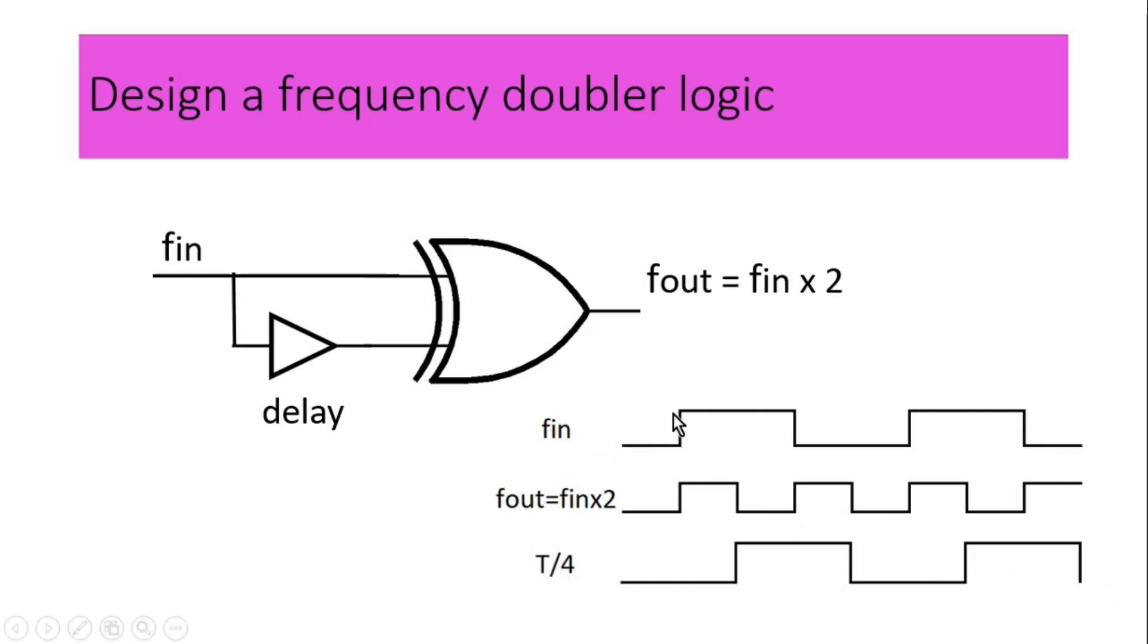This T is time period of this f_in signal. Now let us do XOR operation together on f_in signal and T/4 signal and see whether we get f_out that is f_in times 2 frequency. Here f_in is 0, T/4 is 0. As per the XOR operation, we should get 0. And we are getting 0.